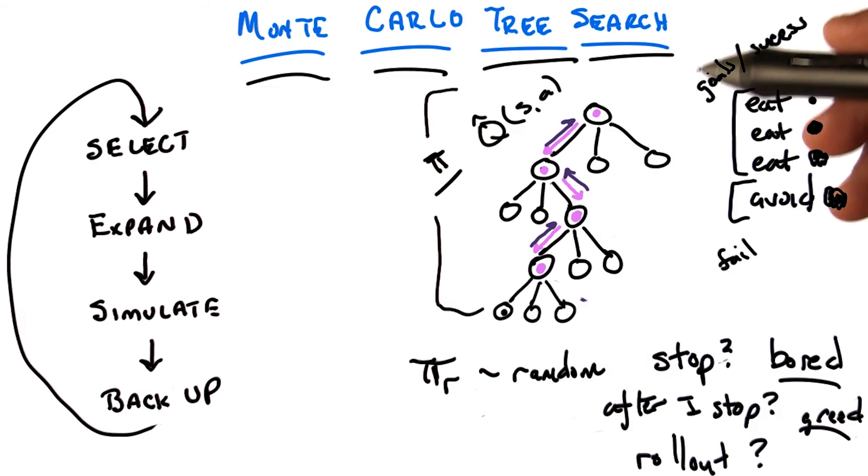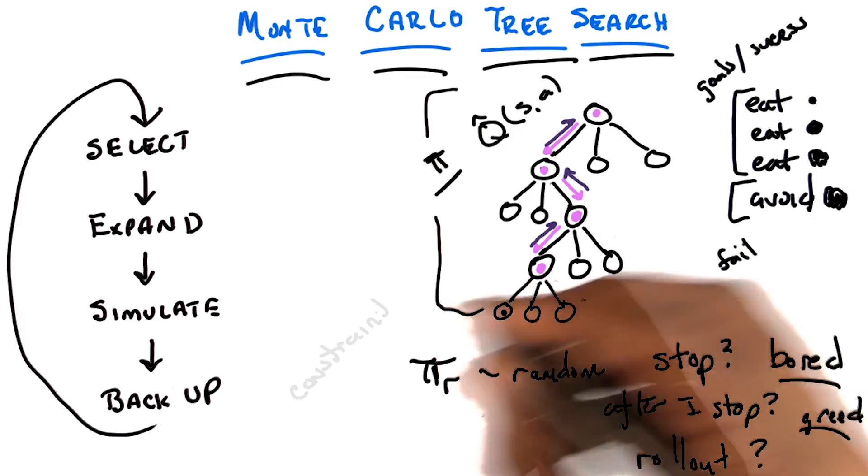So it turns out that when you ask people to come up with these kinds of things, these kinds of options, they actually come up with things that look like this—lots of goals with lots of success metrics. But they also come up with things where you can sort of only fail. We actually have a word for that, and they're called constraints.